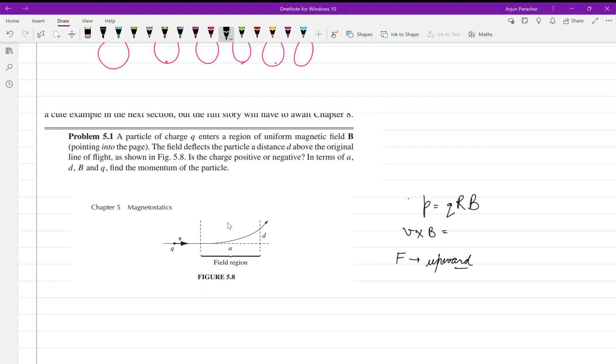But if we take another case where magnetic field has the opposite direction - say it has a direction outside the page - then force will be downward. In that case we'll be getting our charge as negative.